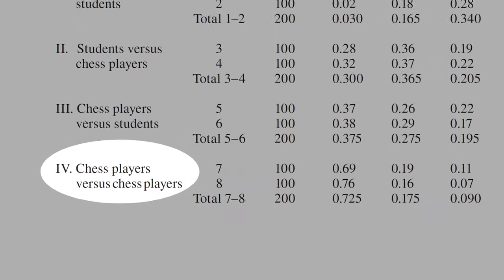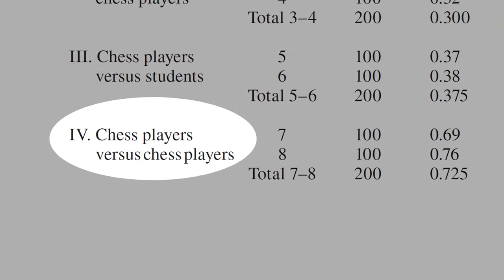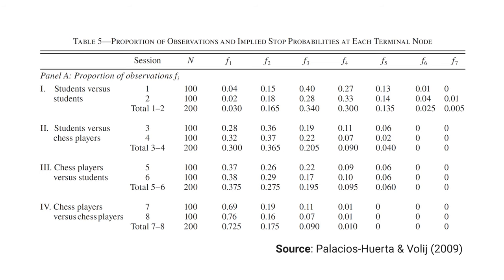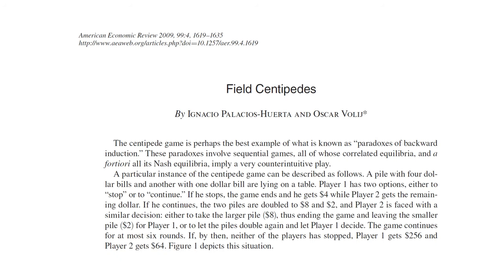But when chess players play against other chess players, this rate increased dramatically to 69% to 76%. This paper is great because it doesn't use any sophisticated statistical techniques, yet provides great insights about human behavior. No wonder it was published in American Economic Review, the most prestigious journal in economics.